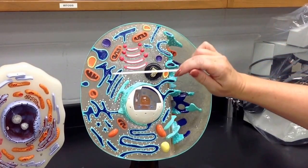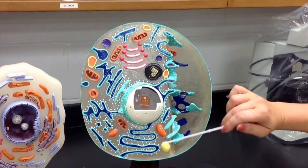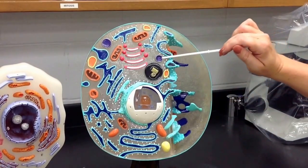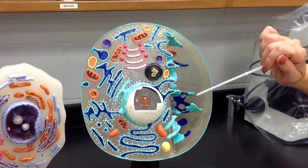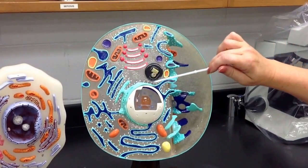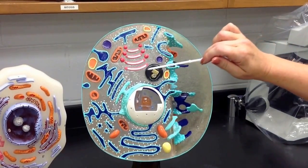Then over here we have our lysosomes and our peroxisomes and then lastly we have right here our centrioles. The centrioles and the centrosome.